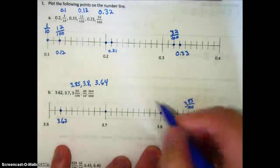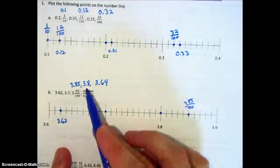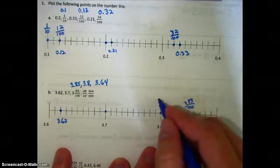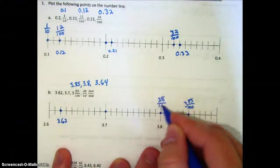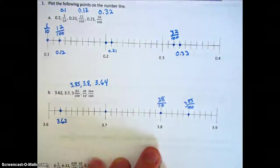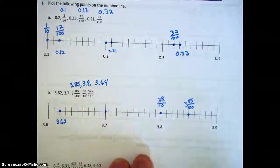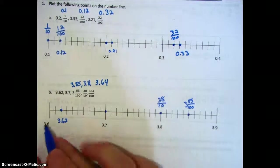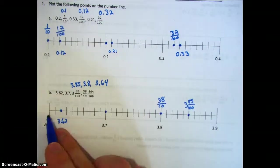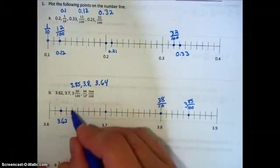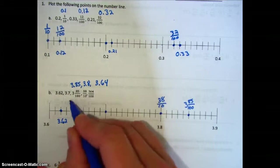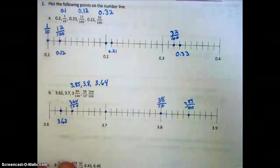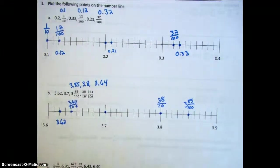Next we have three and eight-tenths, or thirty-eight-tenths. And then finally three and sixty-four hundredths: go to three and six-tenths, then count over one, two, three, four — and there's our three and sixty-four hundredths.